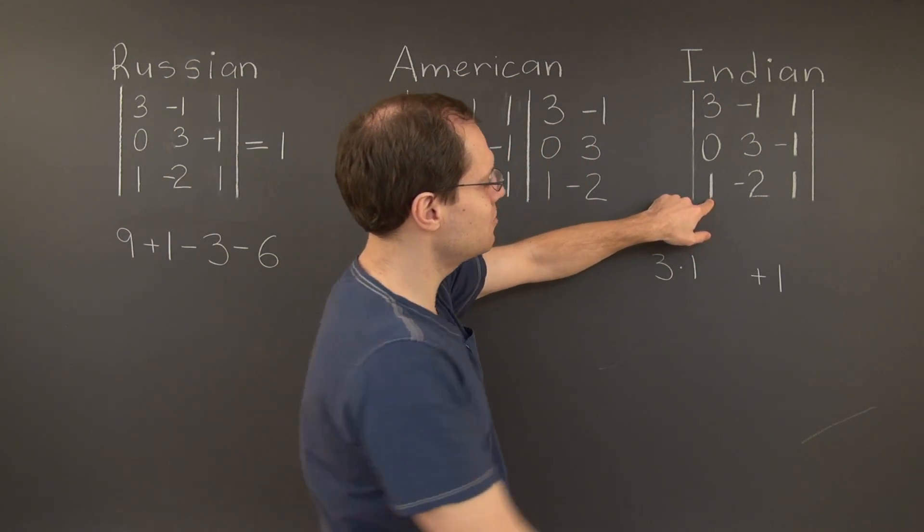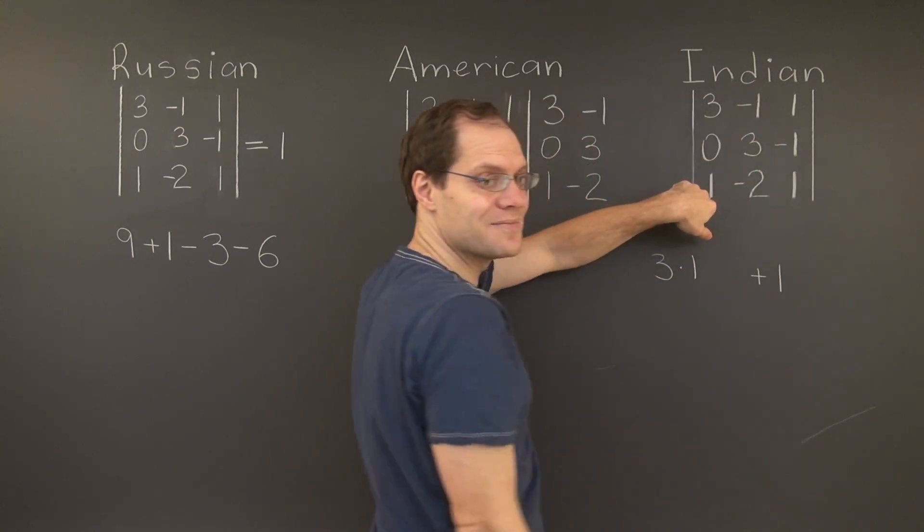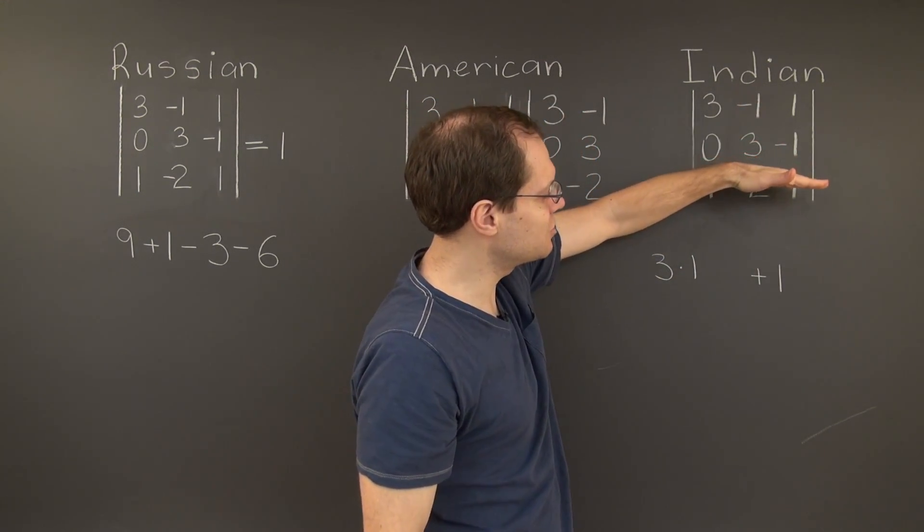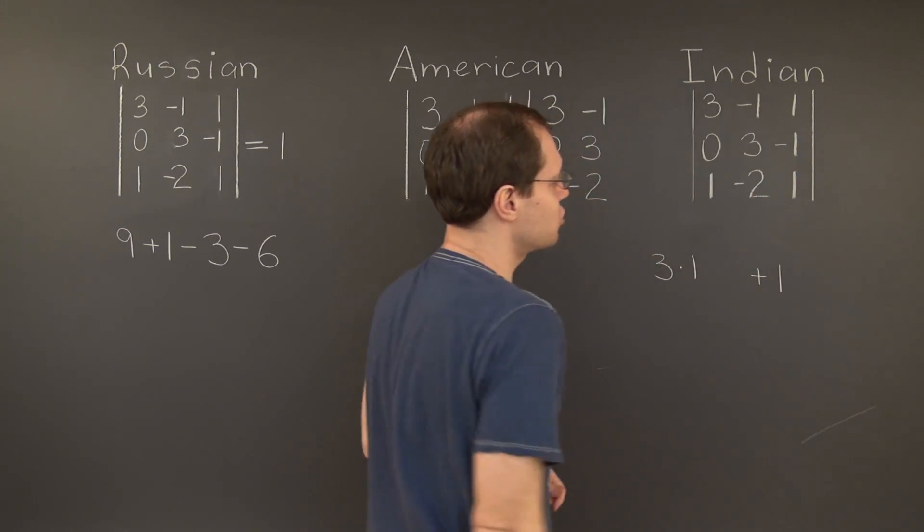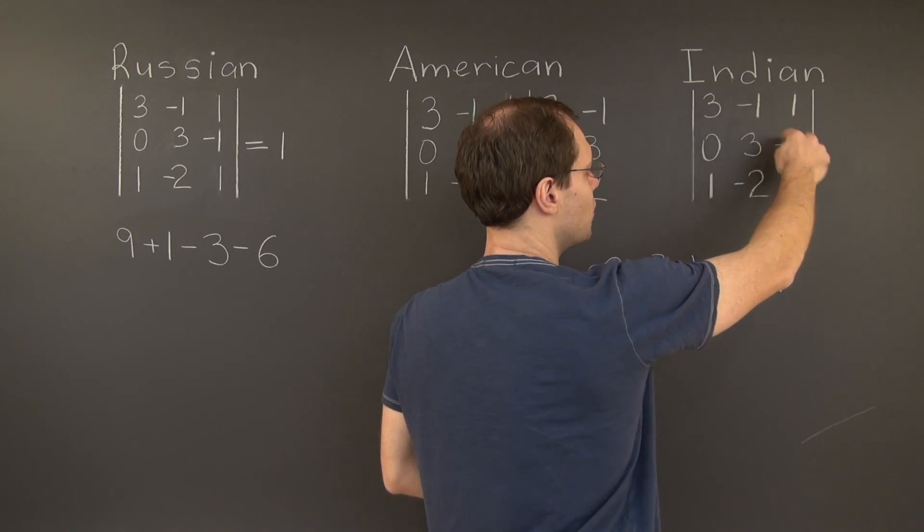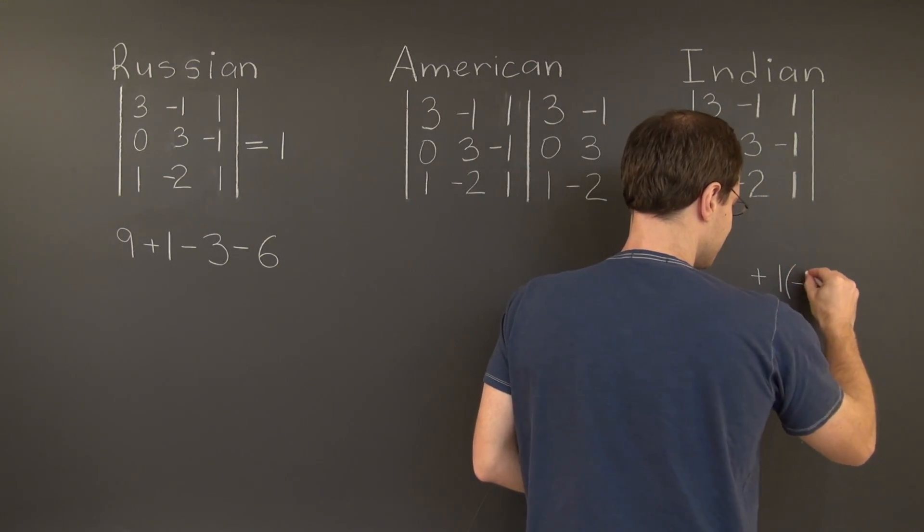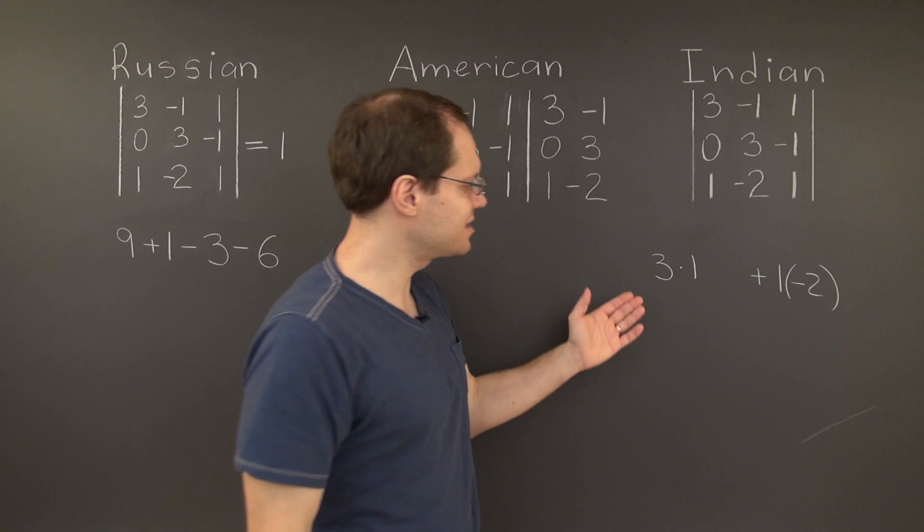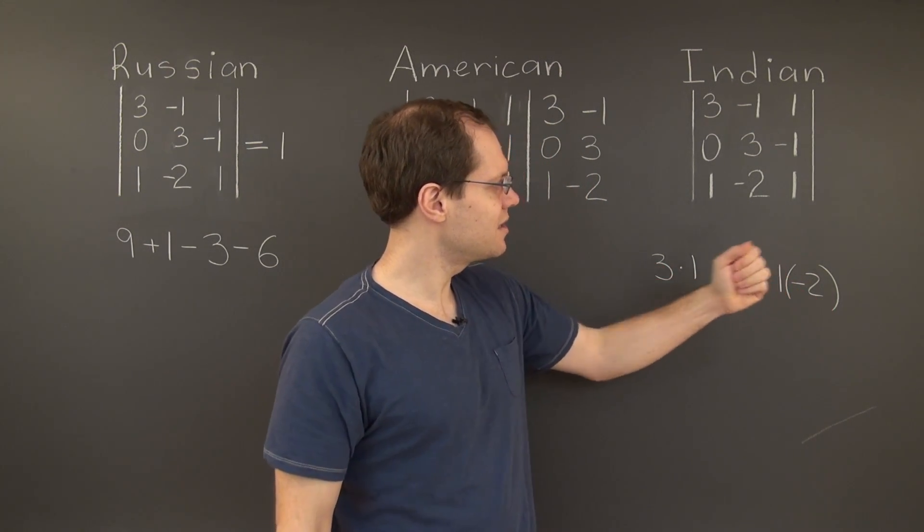And now on to this term. The corresponding 2x2 determinant is this one right here. Once again I mentally crossed out this row and this column. So I'm left with this 2x2 determinant. Which of course is 1 minus 3 or minus 2. And it's clear I didn't even need all this space. The result is 1.